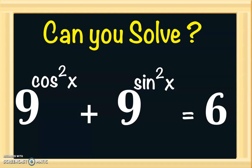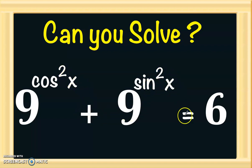Hi all, it's Super Easy Math. In this video we're going to solve this equation: 9 to the power cosine squared x plus 9 to the power sine squared x equals 6. Please pause the video and give it a try, and now let's go ahead into the solution.